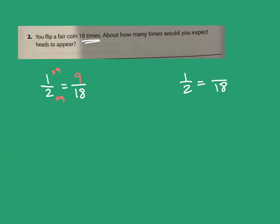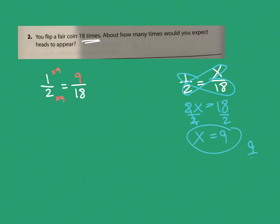I'll take you through the cross-multiplication steps one more time. Multiply the crosses: two times x is 2x, and one times 18 is 18. To isolate x, do the inverse of multiply by two — divide both sides by two. Two divided by two leaves one x; 18 divided by two is nine. So x equals nine, giving nine out of 18 — the same answer. Two ways to do it, in case the multiplication isn't immediately clear.